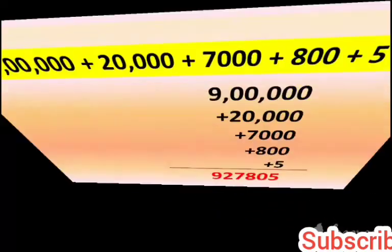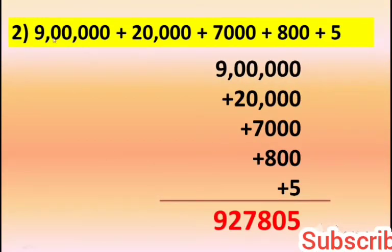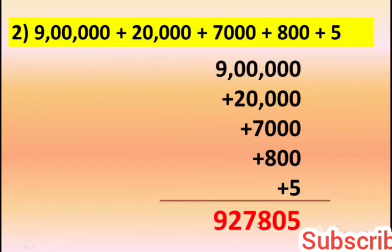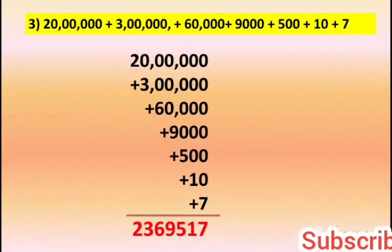The answer is 64,679. Next: unit, 10, 100, 1000, 10,000, and lakh. 9 lakh plus 20,000 plus 7,000 plus 800 plus 5. Adding each digit: 5, 8, 7, 2 — the answer is 9,27,805.